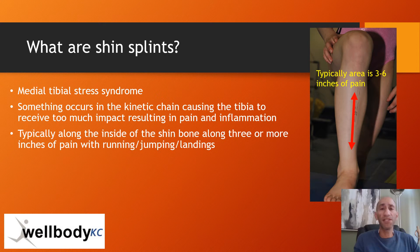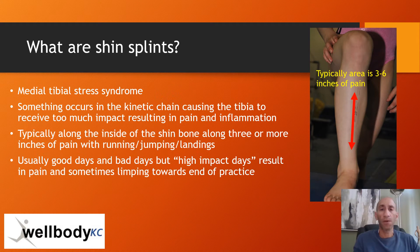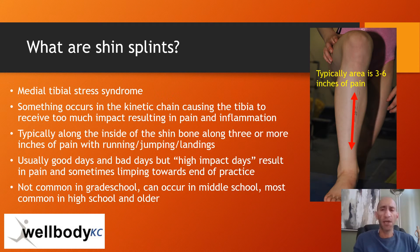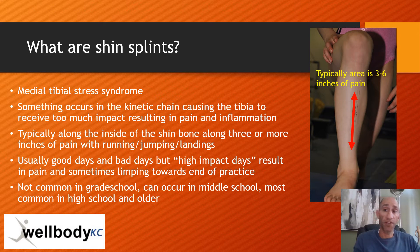Typically it's along the inside of the shin bone where the red arrow is, and it's a strip of pain three to six inches long. Usually there are good days and bad days, but the high impact days almost always cause trouble, even limping at the end of practice sometimes. While it's not very common in young athletes, middle school, high school, and college athletes find it a nuisance in almost every impact sport.